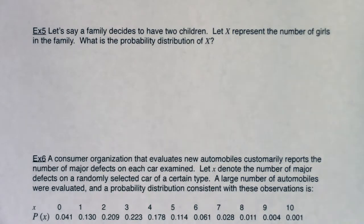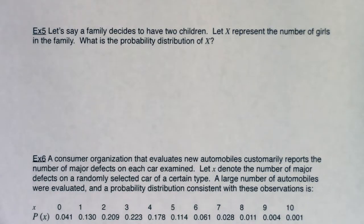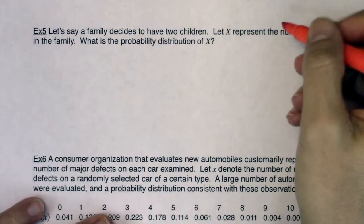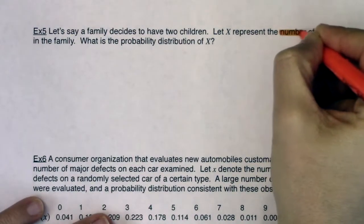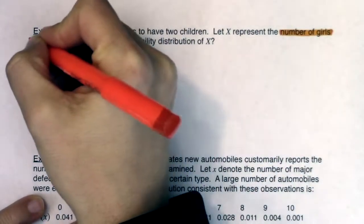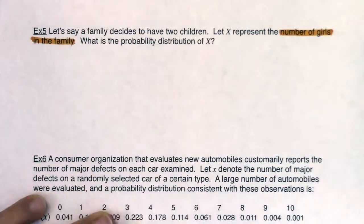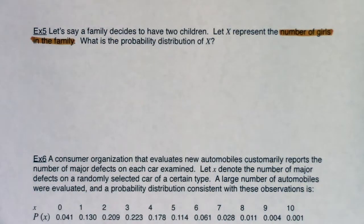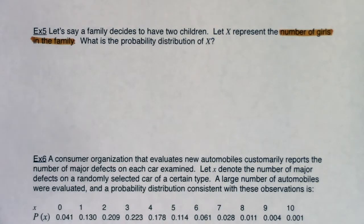What's the variable in this problem? Let's see if we can spot it. The family is going to have two kids. X is going to represent the number of girls in the family, and we want a PDF. The phrase 'number of' will always be an indication of your variable. If you ever see 'number of something,' that's definitely your variable.